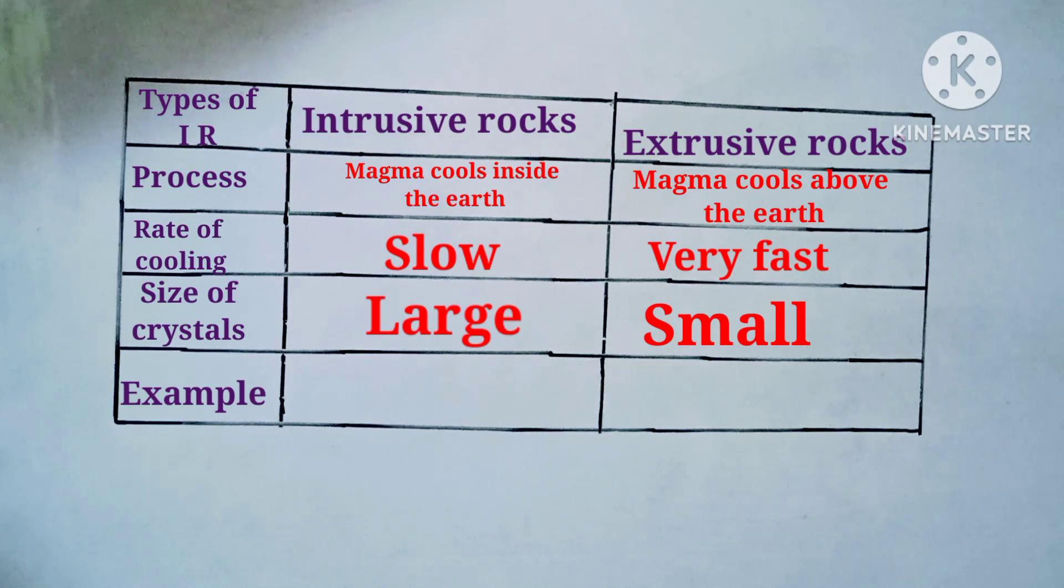Let us see the examples. For intrusive rock, that is granite, and for extrusive rock, it is basalt. These granite and basalt are two examples of igneous rocks. Let us see some characteristics of these.